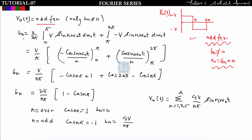Since only b_n exists, we find b_n = (2/2π) × integral over 2π of f(t) sin(n·ω₀·t) d(ω₀·t). We divide the waveform: from 0 to π it is +V, and from π to 2π it is −V. So the integral becomes: integral from 0 to π of V·sin(n·ω₀·t) d(ω₀·t) plus integral from π to 2π of (−V)·sin(n·ω₀·t) d(ω₀·t). Integrating sin gives −cos(n·ω₀·t)/n.